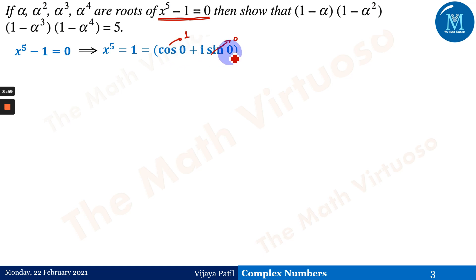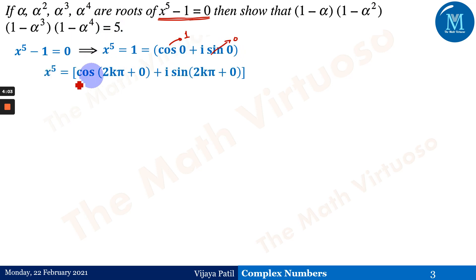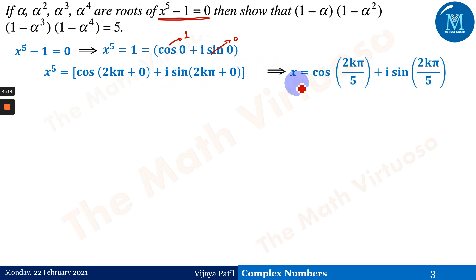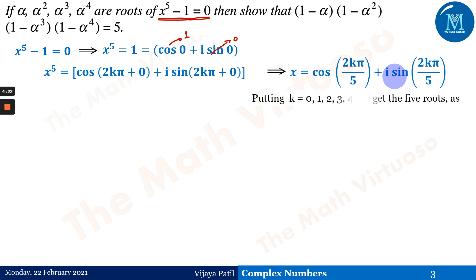Therefore, x⁵ = cos(2kπ + 0) + i sin(2kπ + 0). This gives x = cos(2kπ/5) + i sin(2kπ/5). Putting k = 0, 1, 2, 3, 4 will give us all five roots. The first root corresponds to k = 0.